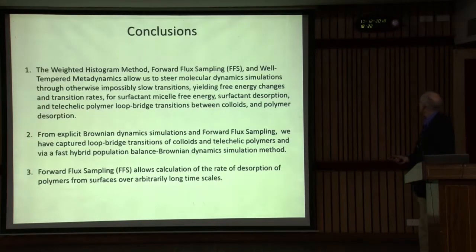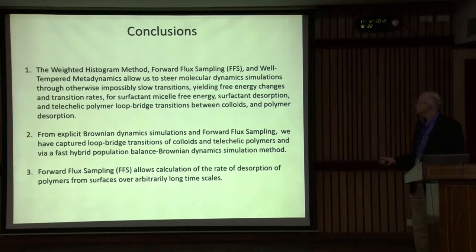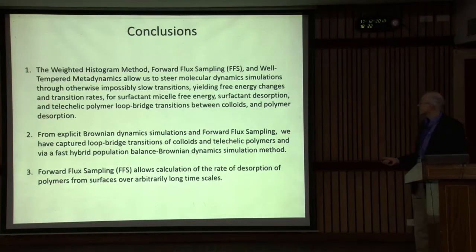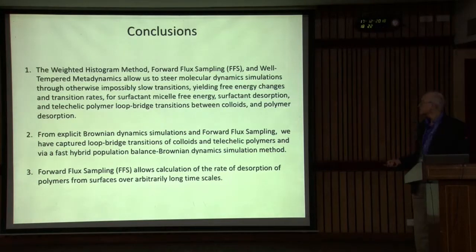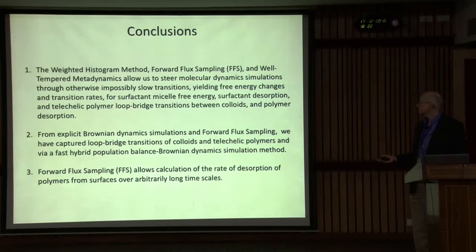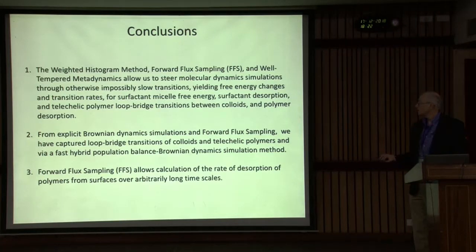To summarize: we use the weighted histogram method and forward flux sampling — and they allow us to steer molecular dynamic simulations through otherwise impossibly slow transitions. Some of these methods give us free energy changes and transition rates. We've applied them to surfactant micelle free energies, surfactant desorption, and polymer loop-to-bridge transitions. We've also captured loop-to-bridge transitions via the fast hybrid population balance Brownian dynamics method, which we hope to use for shearing flows — one could add hydrodynamic interactions and do Stokesian dynamics, fairly quickly working up to complicated problems where polymers bridge particles together and change dynamically as a function of configuration.